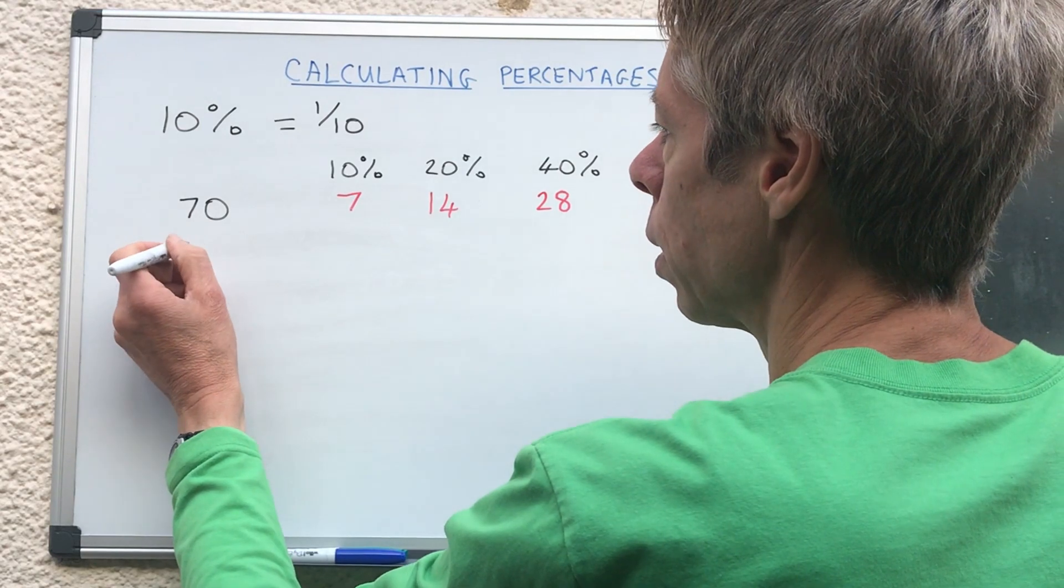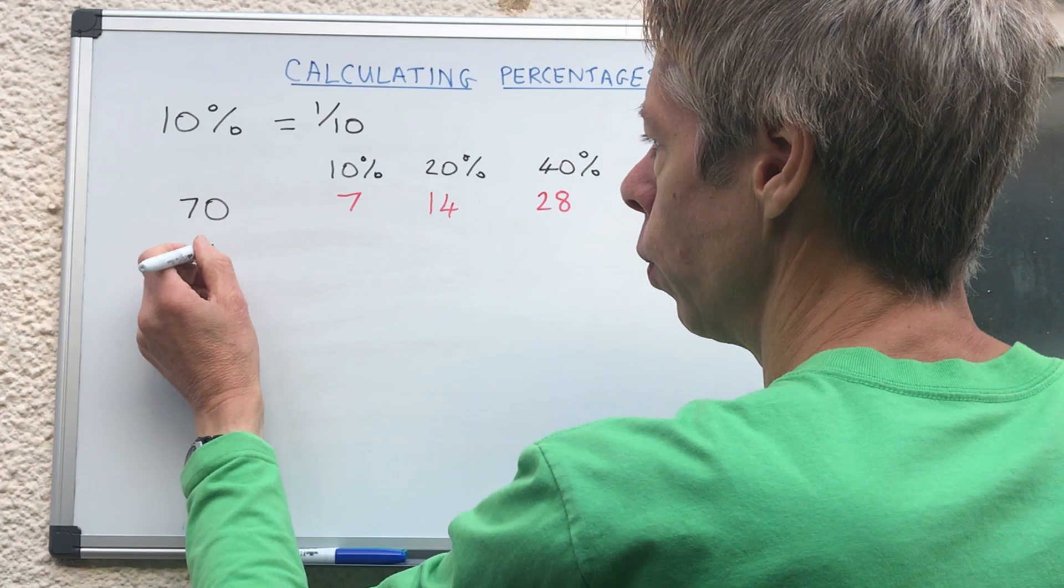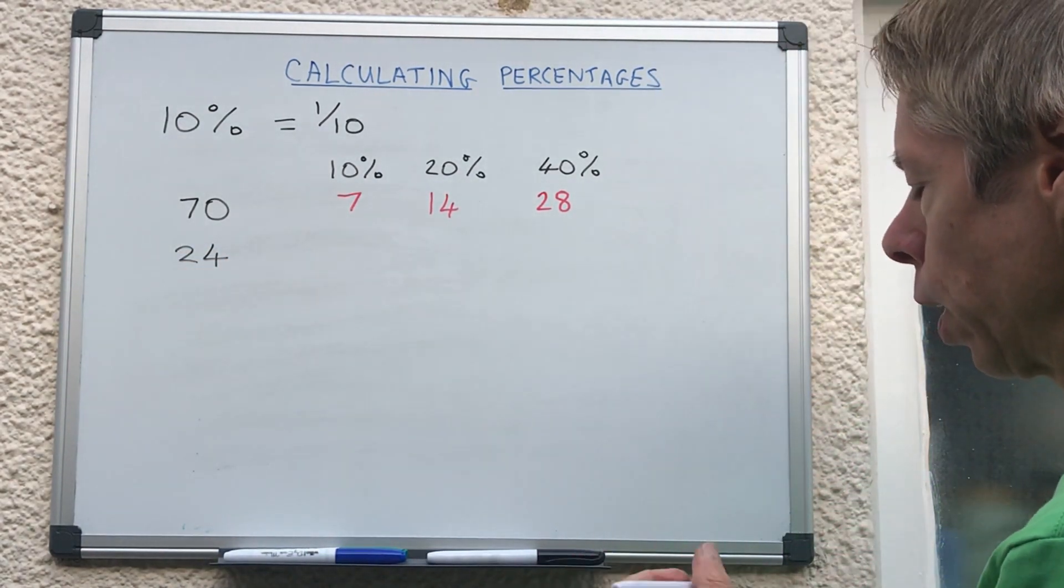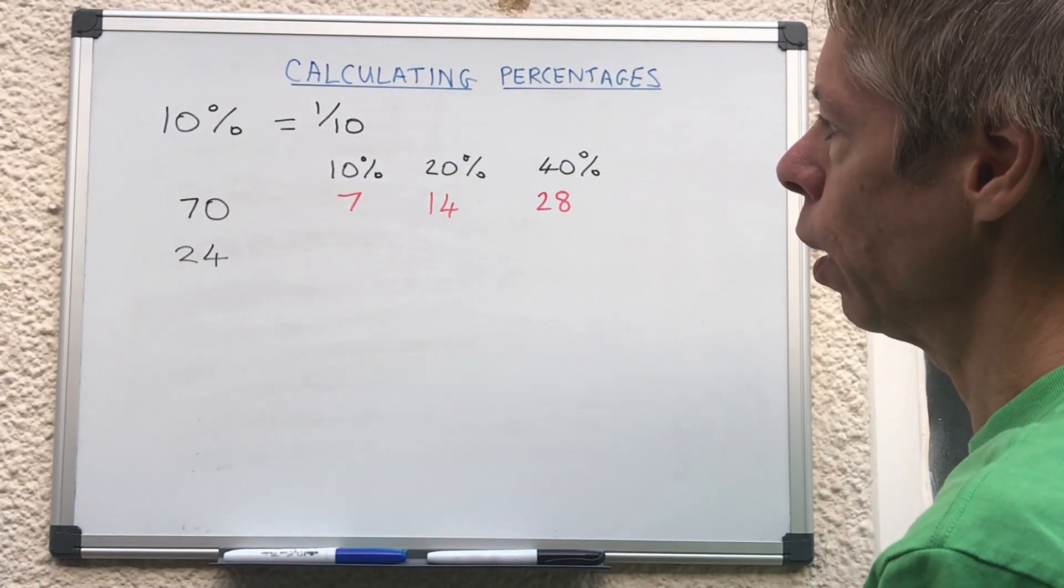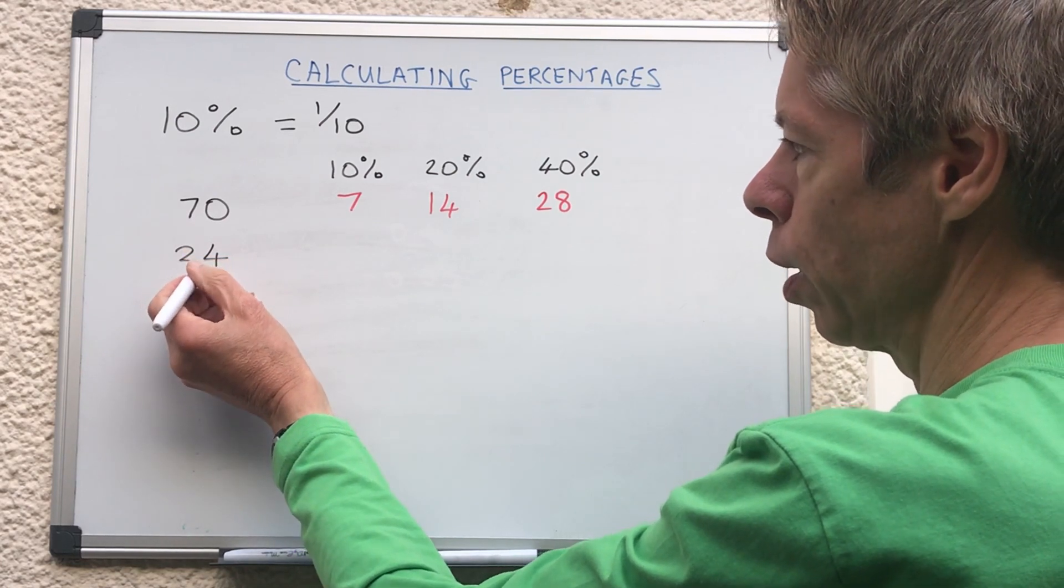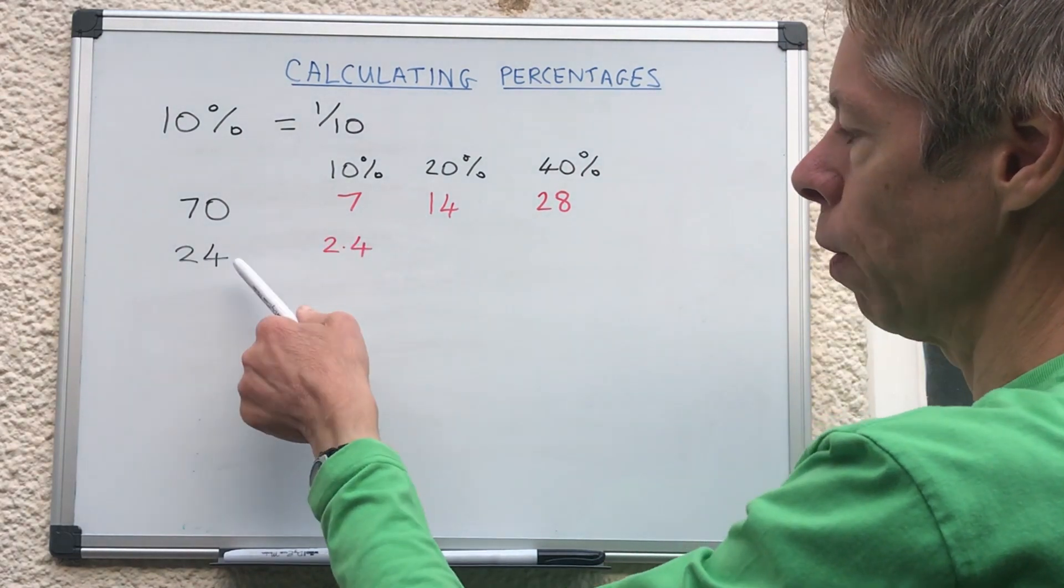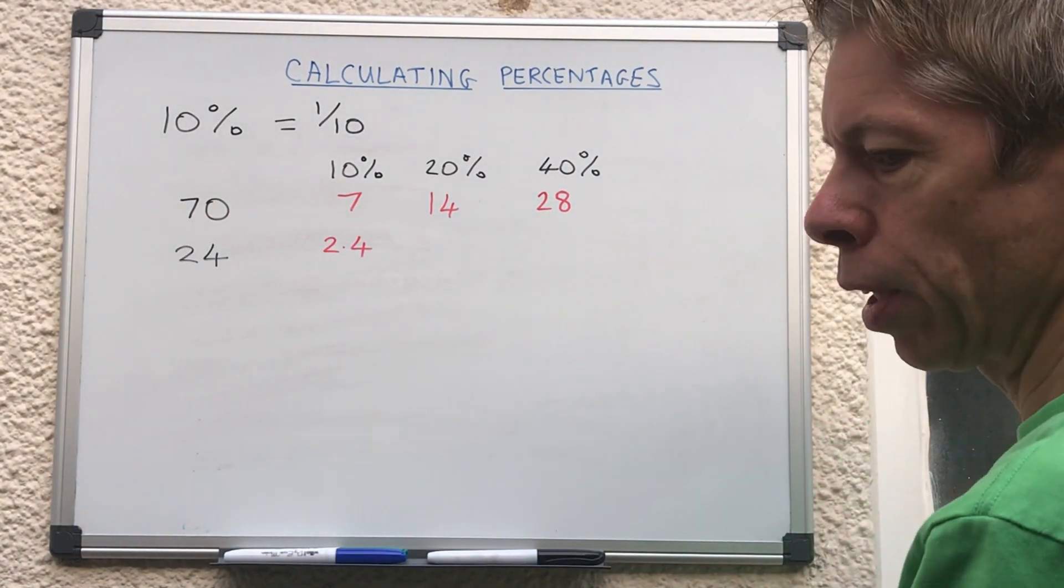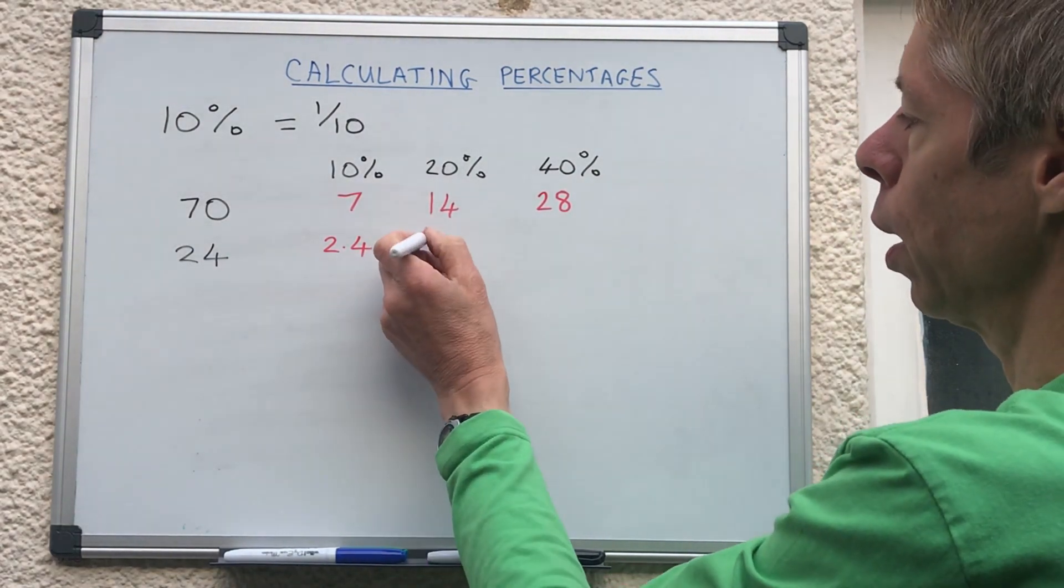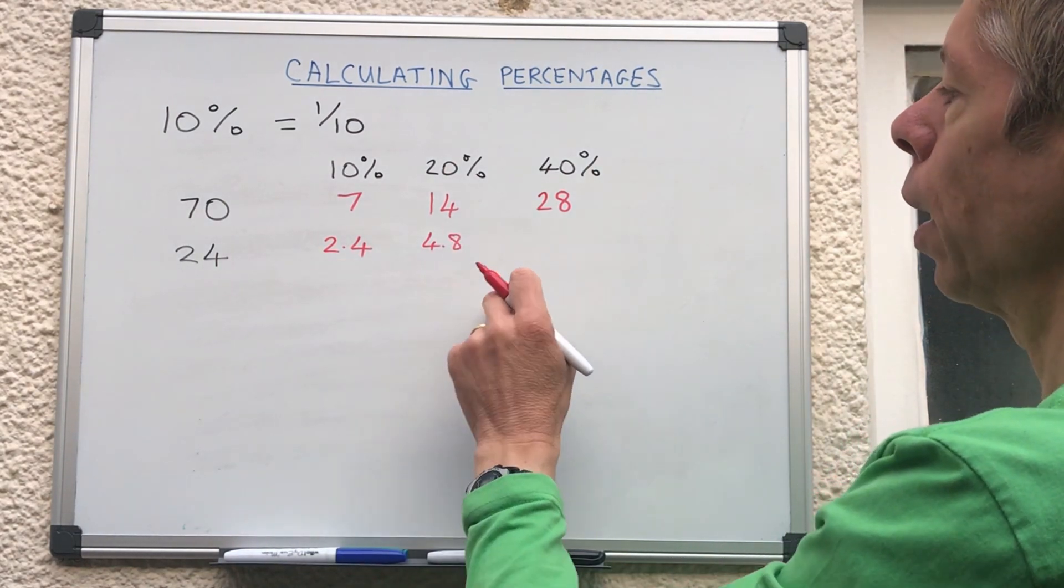What about if we had something slightly more difficult? Let's say we had twenty four. So first of all we need to know what ten percent of twenty four is. Well we're dividing by ten so we're putting a decimal point before the last digit which will give us 2.4. So ten percent of twenty four is 2.4. If we wanted to know twenty percent, well now we know 2.4 is ten percent, all we do is double it so we get 4.8.